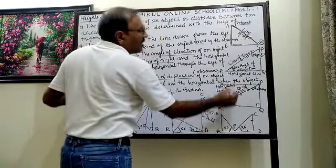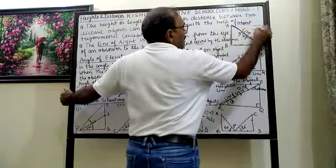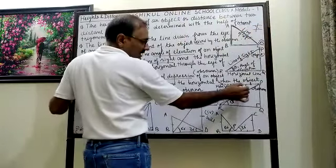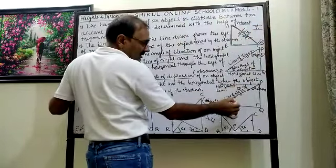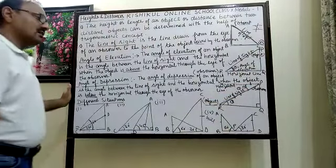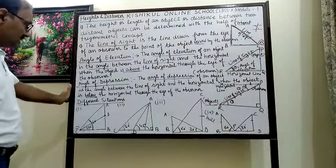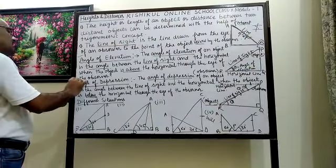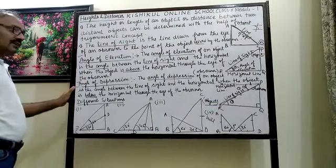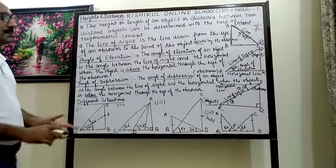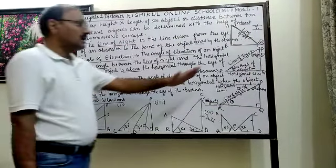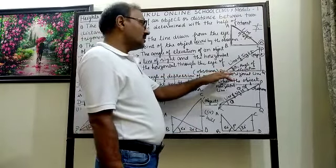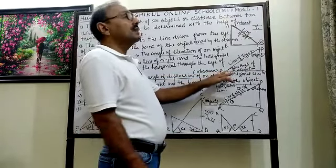This angle of depression equals the alternate interior angle on the other side — for example, if this angle is 45 degrees, then the alternate interior angle is also 45 degrees.